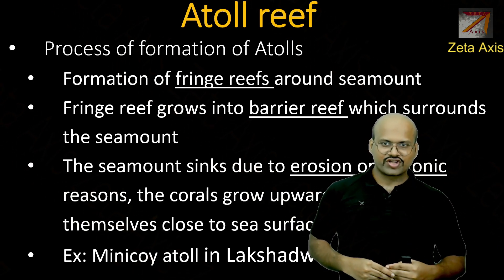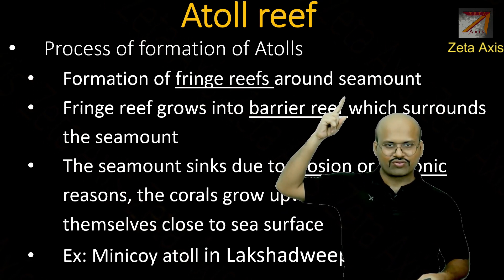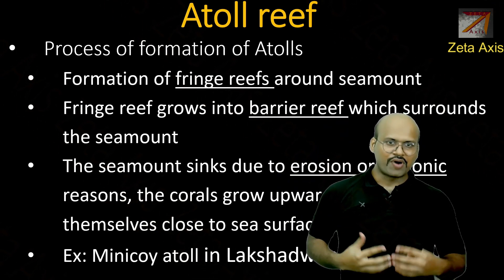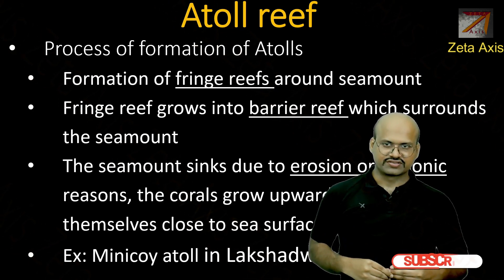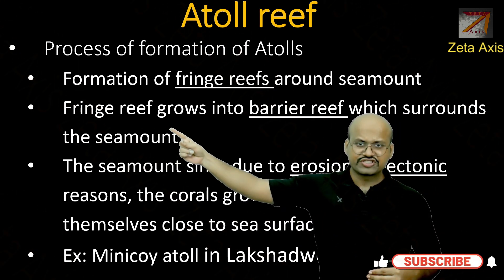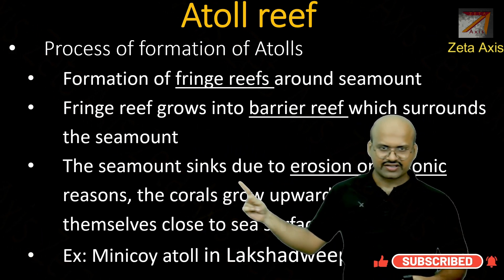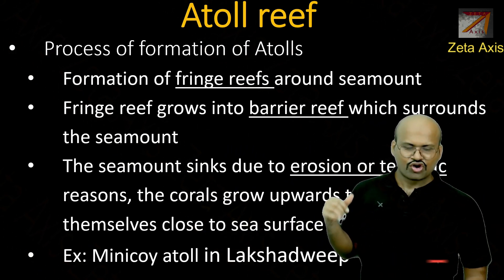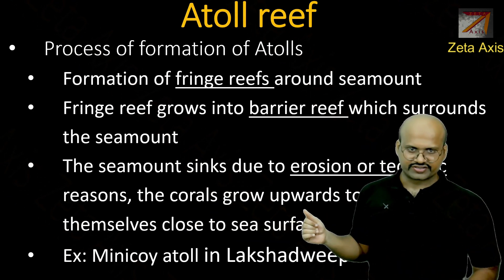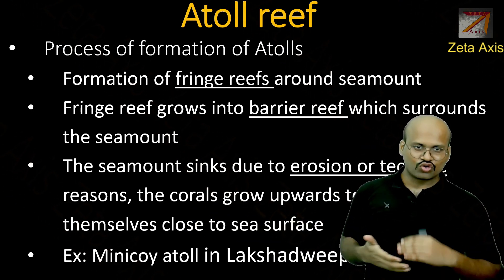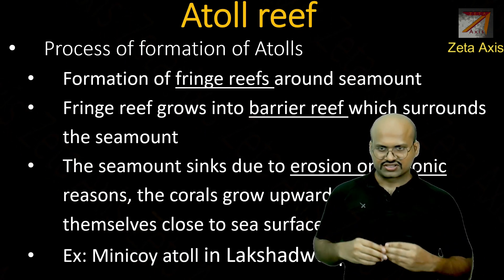Here is the process of atoll formation: it starts as a fringe reef around a seamount — mountains in the ocean that reach the surface. The fringe reef grows into a barrier reef surrounding the seamount. The seamount then sinks due to erosion, tectonic movement, or rising sea levels, and the corals grow upward to remain close to the water surface for photosynthesis.